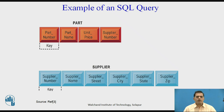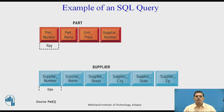In the part relation, the fields are part number, part name, unit price, and supplier number. In the supplier table, the fields are supplier number, supplier name, supplier city, supplier state, and supplier zip.